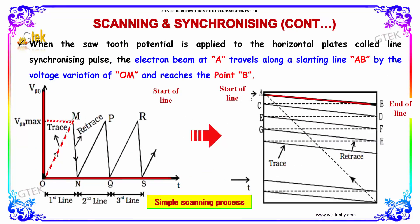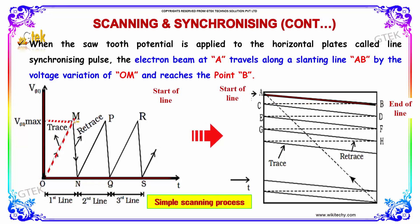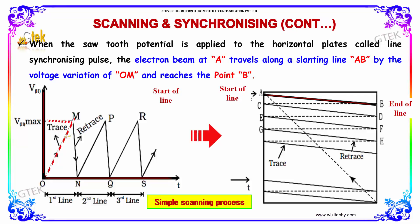When the sawtooth potential is applied to the horizontal plates, called the line synchronizing pulse, the electron beam at A travels along the slanting line AB by the voltage variation OM and reaches the point B. This is the first line.